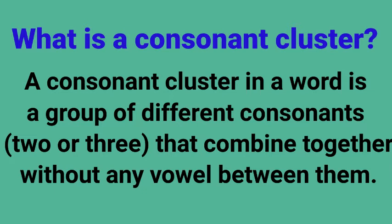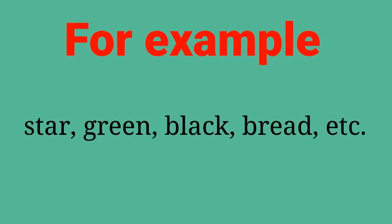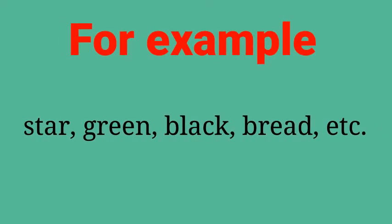Consonant cluster وہ حروف کا مجموعہ ہے جو دو یا تین consonants سے ملا ہوا ہو اور اس میں کوئی vowel نہیں پایا جاتا، جس کو ہم consonant cluster کہتے ہیں۔ For example: star, green, black, bread. Star میں 'st'، green میں 'gr'، black میں 'bl' اور bread میں 'br' consonant cluster ہے۔